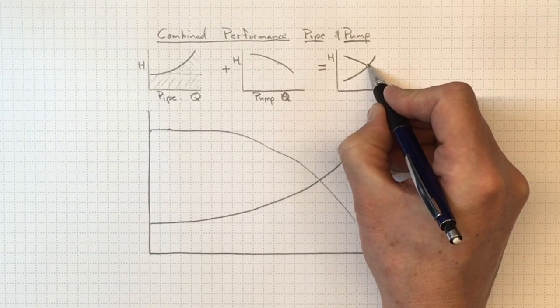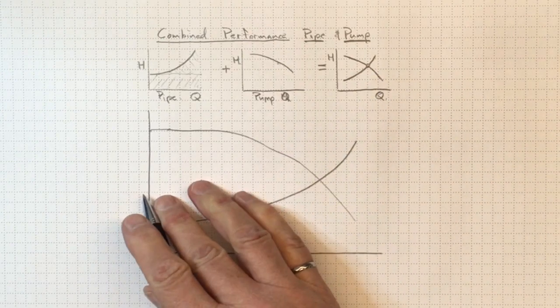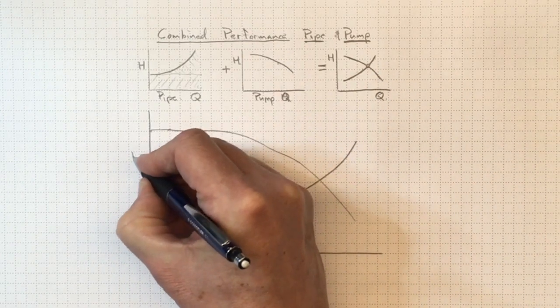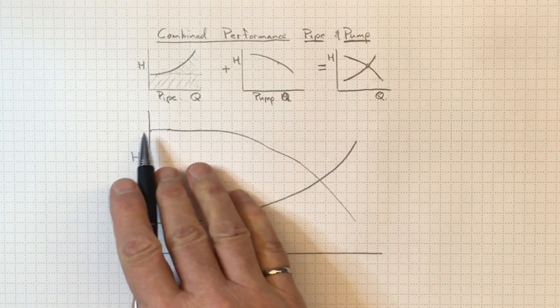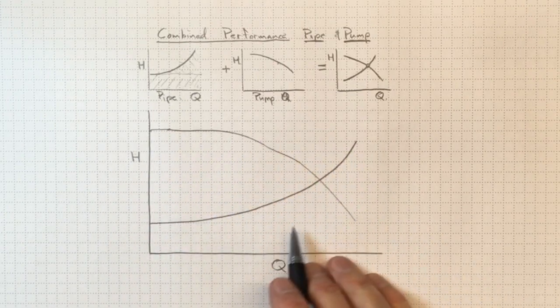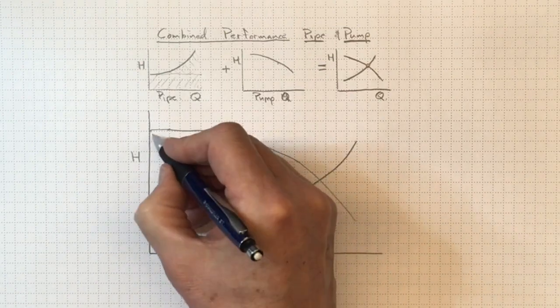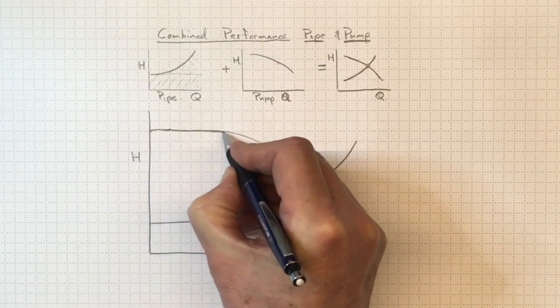Now let's think a little bit about how it's going to get there. Let's look at this larger curve here. We've got the head, we've got the flow. We've gotten rid of all the other complicated stuff that's on the manufacturer's diagram, and we've got just the head flow relationship for the pump that we're going to use.